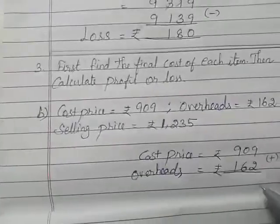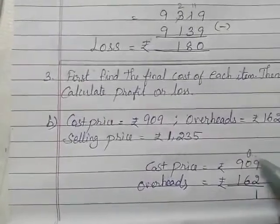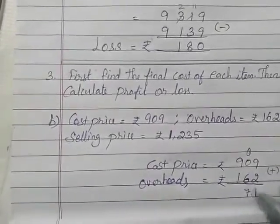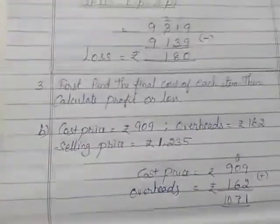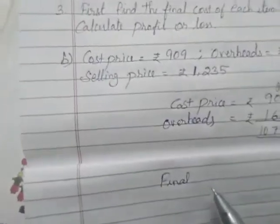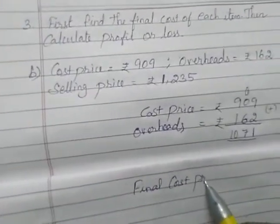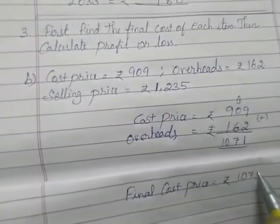So 9 plus 2, 11. So remaining 1, 1 plus 6, 7, 9 plus 1, 10. So final cost price is, final cost price, rupees 1071.